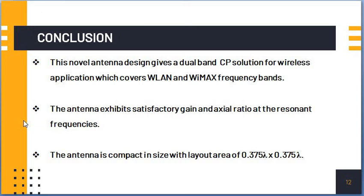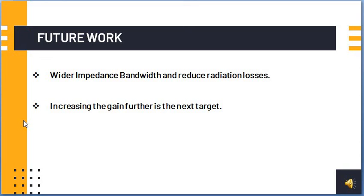The antenna is very compact in size and the area in lambda is 0.375 lambda by 0.375 lambda. In the future work, improving the bandwidth, that is wider impedance bandwidth with reducing the radiation losses and increasing the gain further is the next target in my future work.